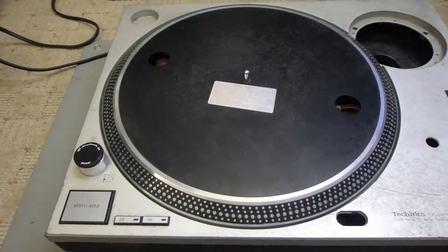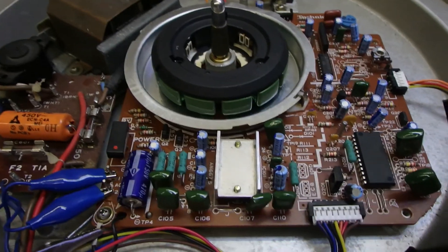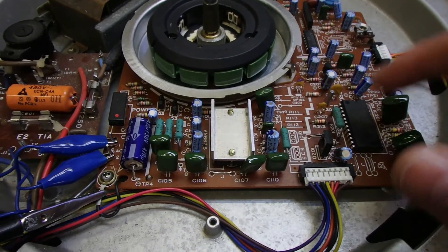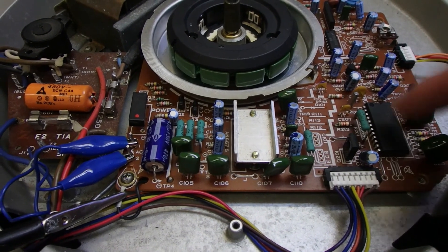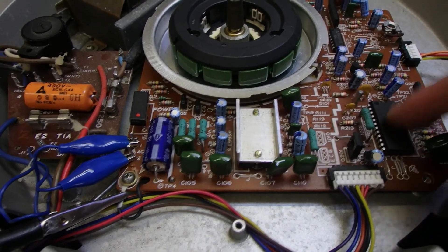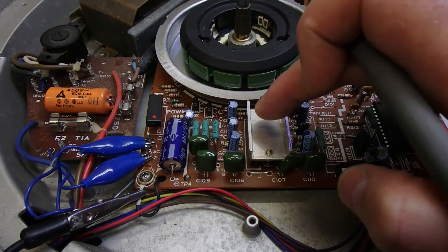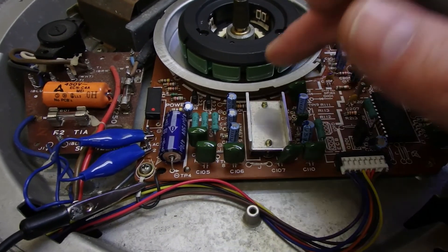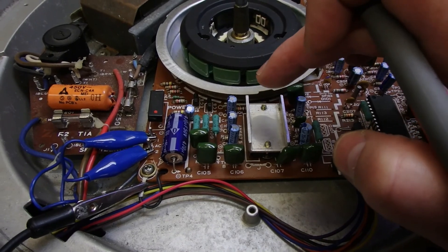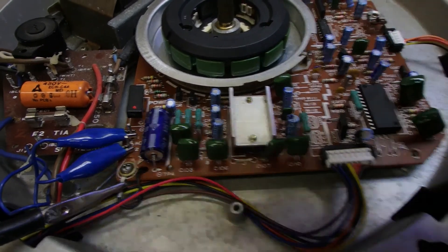Right, so I'll pull it apart now and we'll have a look at it. Because we have control, we can start and stop, it's fair to say we can exonerate the 6680, which wouldn't really cause this problem anyway. 6675 can and does cause this problem, but usually it will run away as soon as you turn it on. We have control, we can stop and start, so I tend to think this is not the problem.